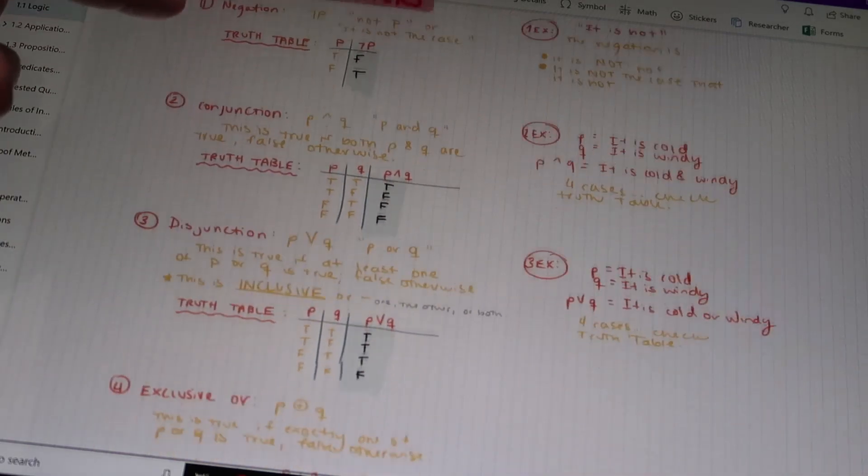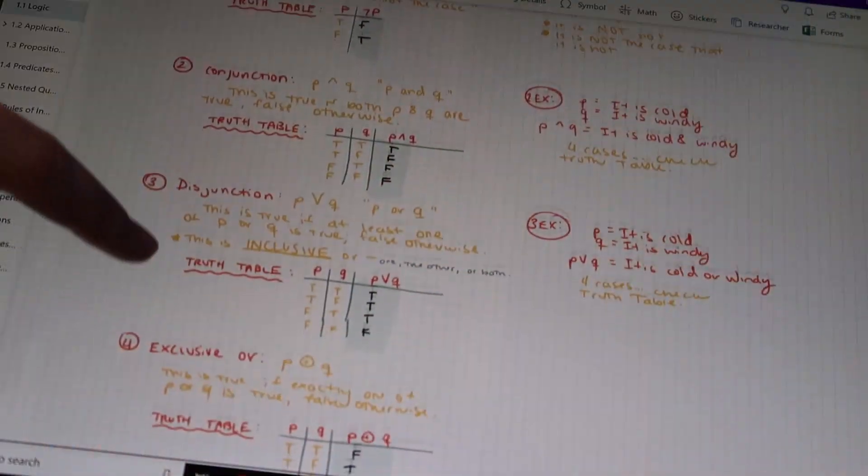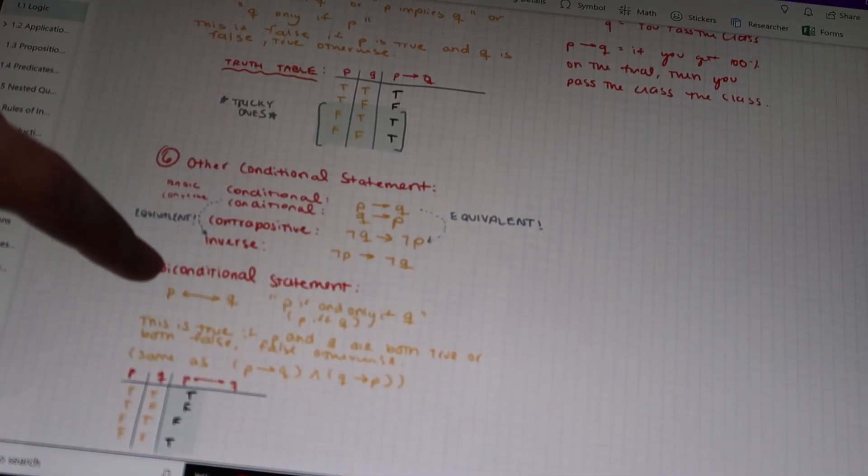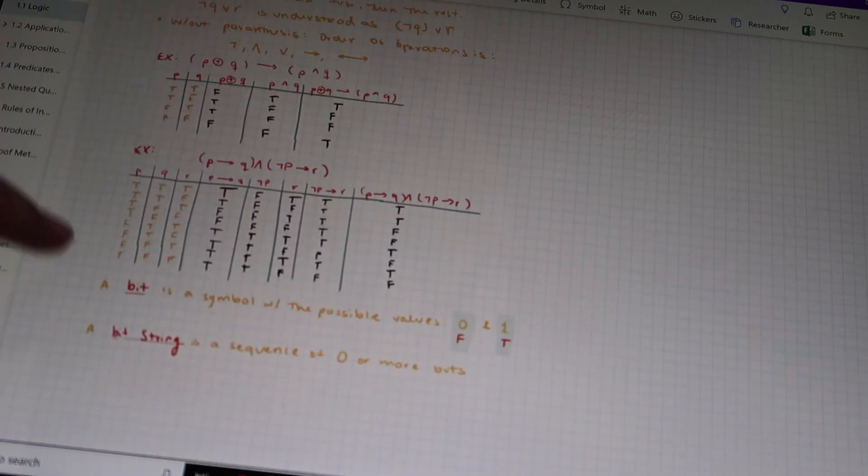Now how do I take notes? Well I love using the stylus. I think it's great to keep the writing aspect whenever you're taking notes instead of just typing, because I believe that typing is more mindless and you don't really have to think about what you're writing down. But whenever you're actually writing things down, I think you're really thinking about what you're jotting down.